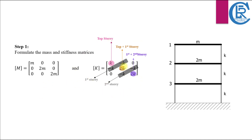Moving to the stiffness matrix: start by inputting the stiffness value for the first diagonal element. The first off-diagonal element will be the negative of the stiffness value of the top story. The second diagonal element is the sum of stiffness of the top and first story, while the corresponding off-diagonal element is the negative of the stiffness of the first story. This pattern continues with each subsequent diagonal element being the sum of the stiffness values of the current story and the one above, and the off-diagonal element being the negative of the stiffness of the current story.